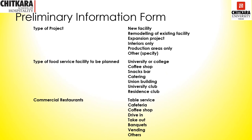The preliminary information form looks like this. The first thing it covers is the type of project. The project could be a new facility, a remodeling of an existing facility, an expansion, an interior decoration of the restaurant or site, a production area or kitchen area upgrade, or other things like the décor, concept change, or replacement of equipment or furniture.